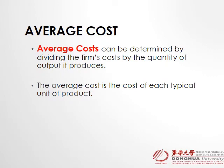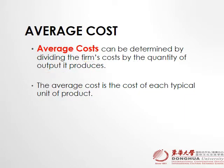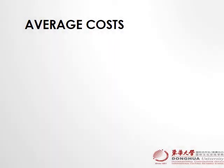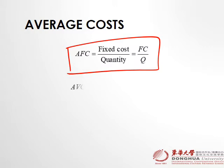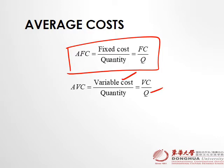Now, what is average cost? Average cost is determined by dividing total cost by output — it is the cost of each typical unit of output. Average fixed cost equals fixed cost divided by quantity. Average variable cost equals total variable cost divided by quantity. Average total cost equals total cost divided by quantity.